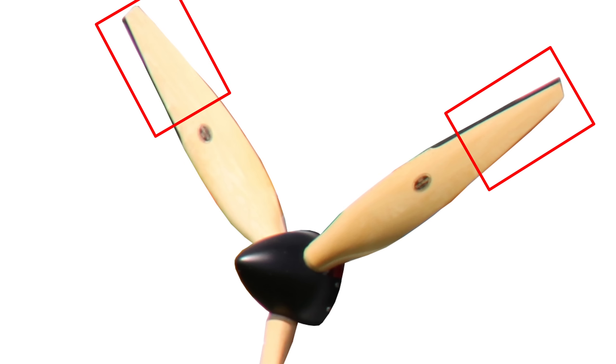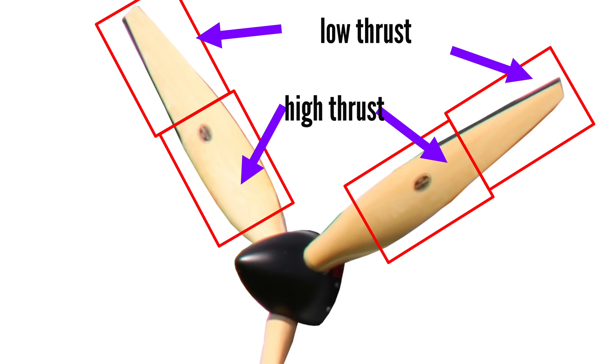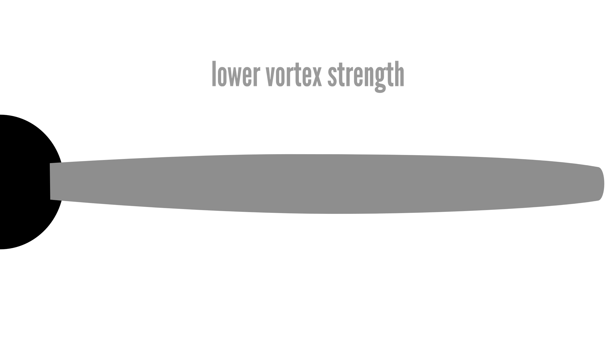Abrupt changes in thrust distribution along the blade result in strong tip vortices, which increases induced drag. By reducing the taper, the strength of the vortices is diminished, which improves the overall efficiency of the propeller.